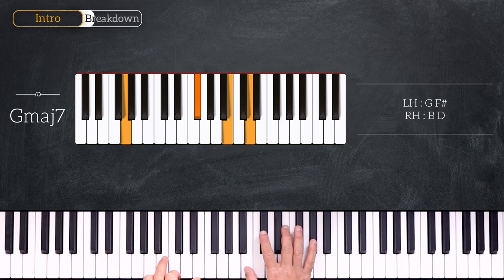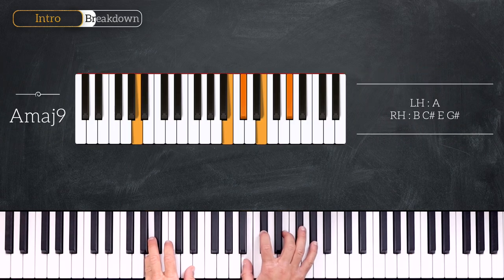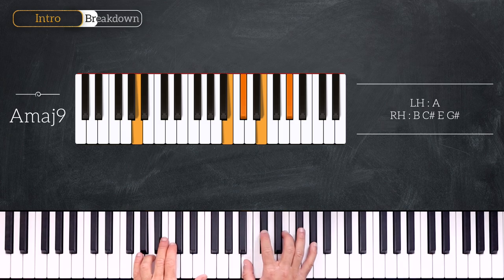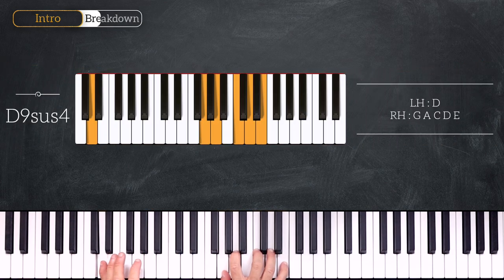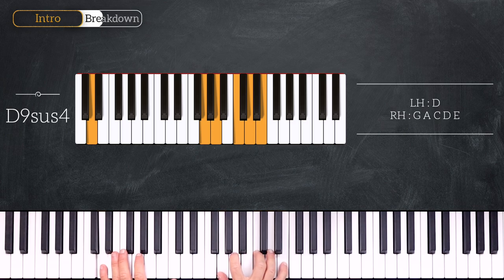We'll then play A major 9. A on the left hand and B C sharp E G sharp on the right. And we'll end this progression with D9 sus4. Playing D on the left and G A C D E.